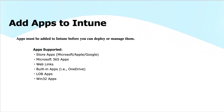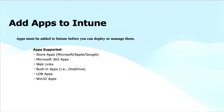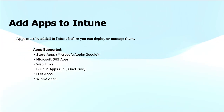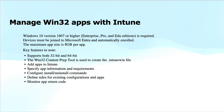Next are Win32 applications. These are traditional desktop applications like .exe or .msi files that run on Windows devices. Intune supports packaging and deploying these applications to Windows systems, along with managing installation, updates, and uninstallation. These are the different types of applications supported by Intune that we can add and deploy.